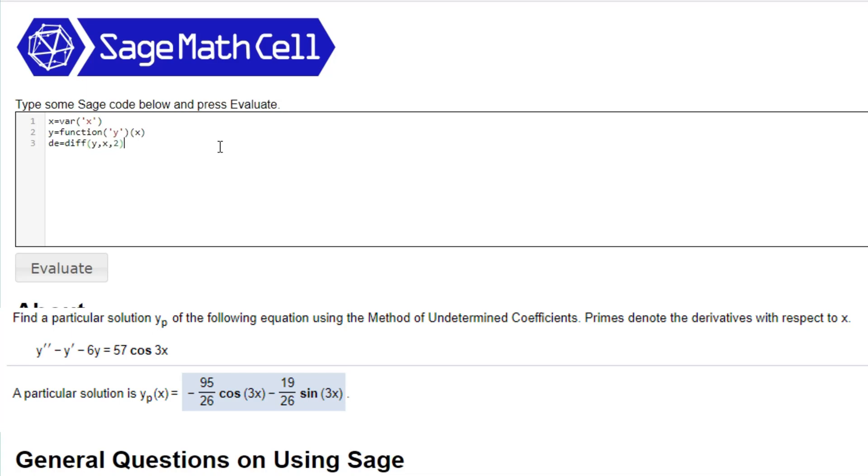It's a second order differential or a second order derivative. You have to put diff(y,x,2) minus diff(y,x) minus 6 times y is equal to this. And then you can name it whatever. I just put it as h and de.